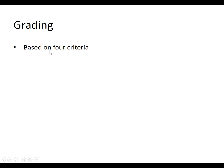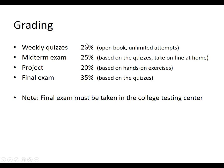Grading. The grade is based on four criteria. The weekly quizzes are all together worth 20% of your grade. The midterm exam is worth 25% of your grade and is taken online at home. The final project is worth 20% of your grade and is based on the hands-on exercises. The final exam is worth 35% of your grade, and note the final exam must be taken at a CCBC testing center.